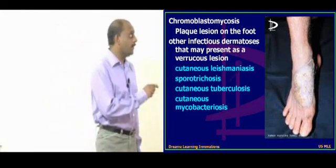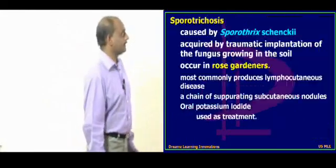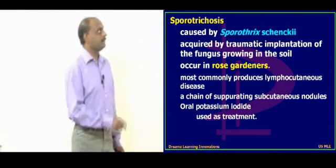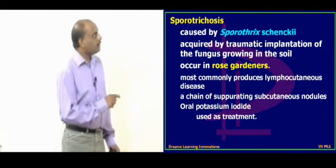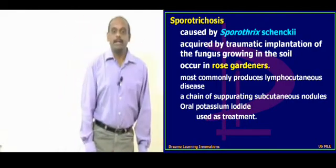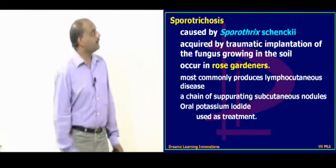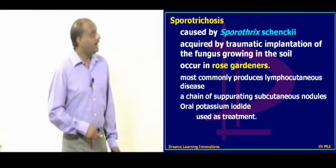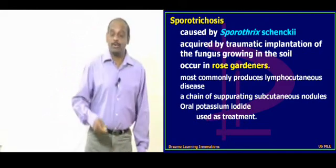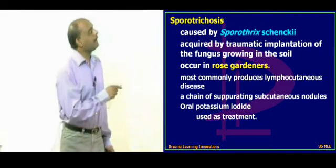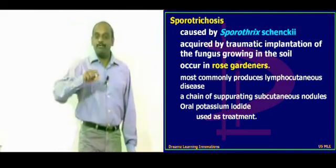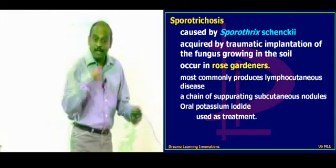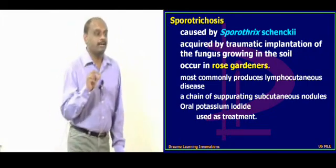Infectious dermatosis leading to verrucous lesions — let us talk about sporotrichosis. It is caused by Sporothrix, typically through traumatic implantation of this fungus which grows in the soil. For example, a fellow who is working in a rose garden comes up with lesions which are typically verrucous in nature — think of sporotrichosis.